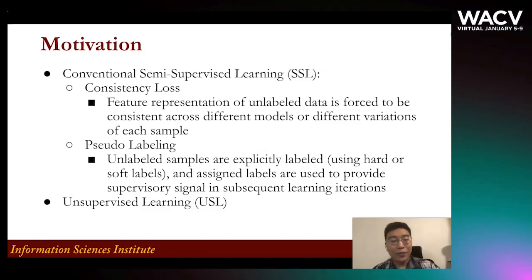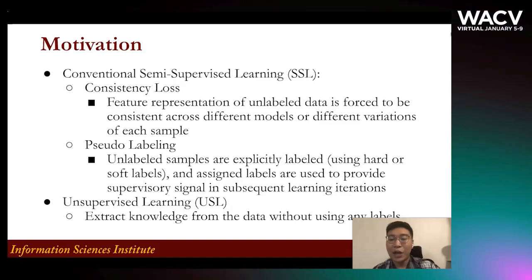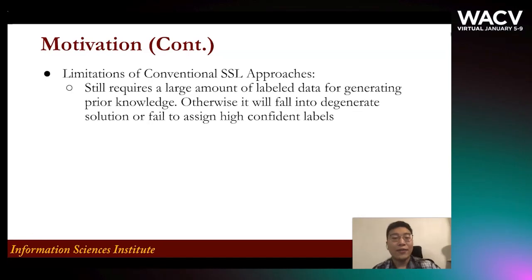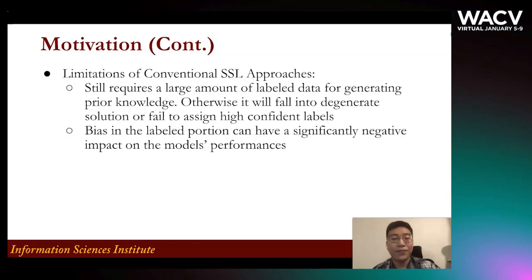When we don't have any label information, unsupervised learning can be used to extract knowledge from the data without using any labels. However, there are some limitations of conventional SSL approaches. For example, we still require a large amount of labeled data for generating prior knowledge; otherwise it will fall into degenerative solutions or fail to assign high-confident labels. Also, bias in the label portion can have a significantly negative impact on the model's performance. When the labeled data significantly reduces, the bias will be more revealed.